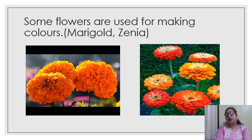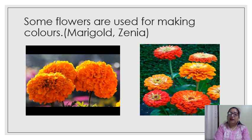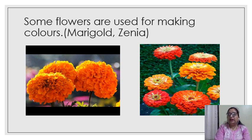Some flowers are also used for making colors. Marigold, as you can see, is yellow in color — we can dry these flowers and make them into powder, then make colors out of it. Next is zinnia, which comes in different colors. As you can see in the picture, there is yellow, red, and orange. These different colors of zinnia are used to make different natural colors.